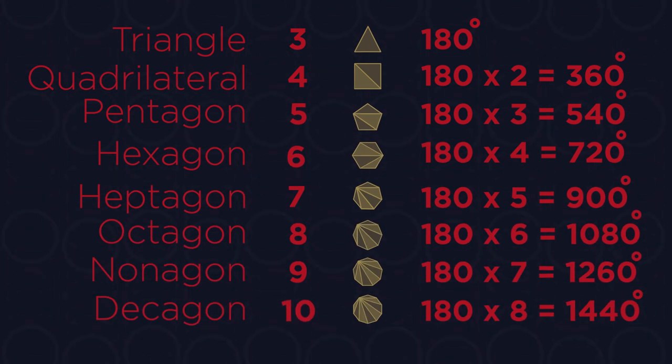For any polygon, there are always two less triangles than there are numbers of sides. So 5 sides times 3. 6 sides times 4.